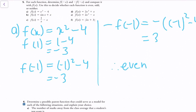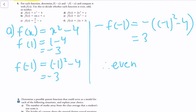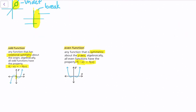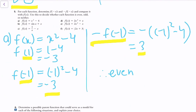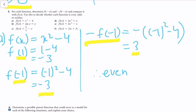For question 5, we determine f(x), f(−x), and −f(x) and compare them to decide if the function is even, odd, or neither. For part A, f(x) = x² − 4: f(1) = −3, f(−1) = −3, and −f(1) = 3. Since f(−1) = f(1) = −3, we have f(−x) = f(x), which confirms the function is even.